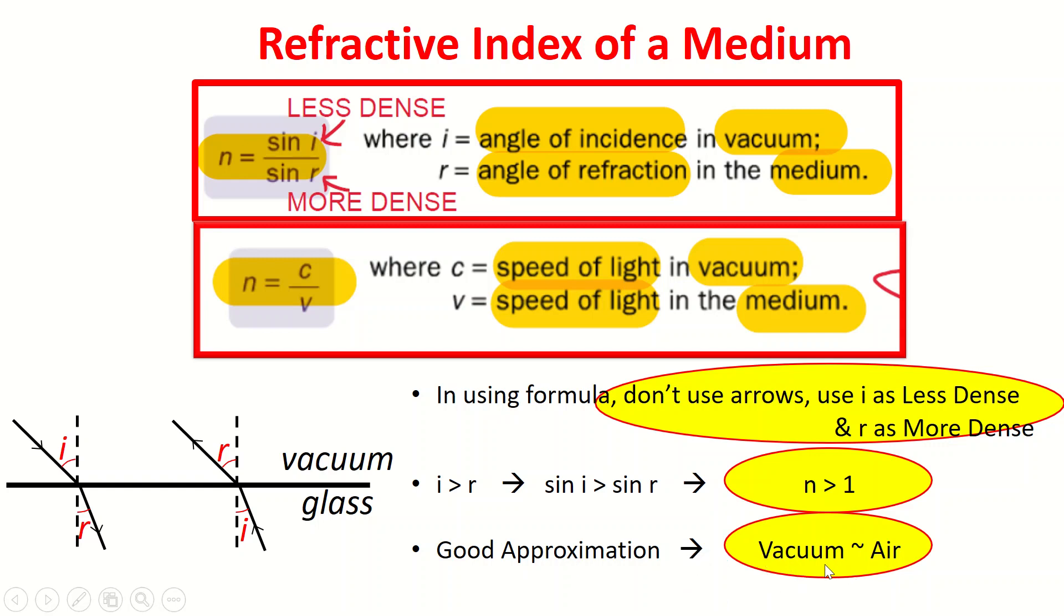And finally it's also a good approximation most of the time we use air to replace vacuum because although our definition states vacuum, most of the time on earth it's pretty difficult to get that.